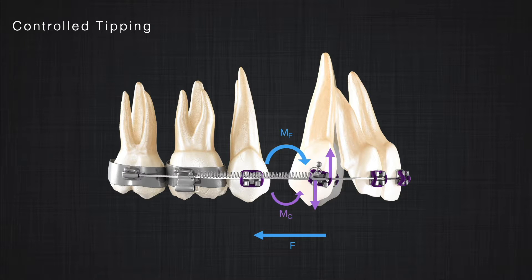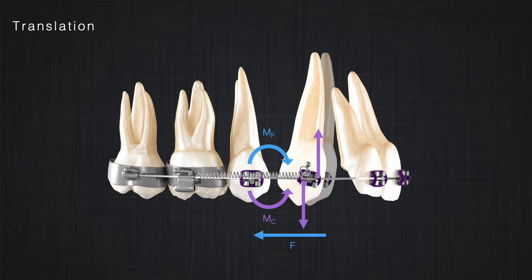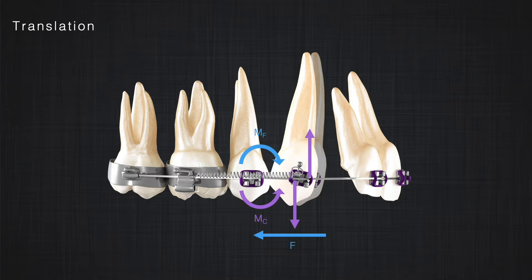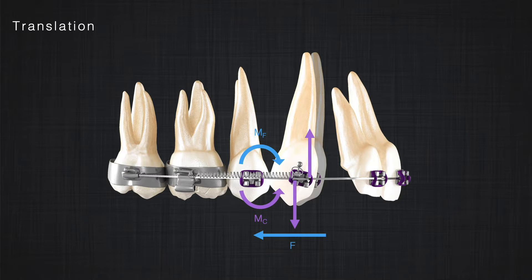Therefore, the type of tooth movement changes from uncontrolled tipping to controlled tipping. As we progress in retracting the canine, the magnitude of these forces increases, and from controlled tipping we can go to translation or bodily movement. As soon as we reach bodily movement, the moment in the system cannot increase further. The tooth movement continues in this format until the canine reaches the premolar. Remember, the system cannot produce reaction moments bigger than what we applied, based on Newton's third law — so we cannot have root movement. We have uncontrolled tipping at the start, then controlled tipping, then bodily movement, but not root movement.